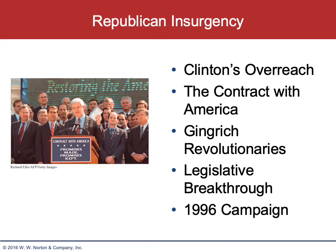Pretty much everybody thought Clinton would be a one-term president, but he improved his popular vote by three points, though he was still not elected by a majority of Americans. His opponent Bob Dole was a very respected man but not a colorful person. His running mate Jack Kemp, a former quarterback for the San Diego Chargers, was put on the ticket partly to try to win back California, but that did not happen.